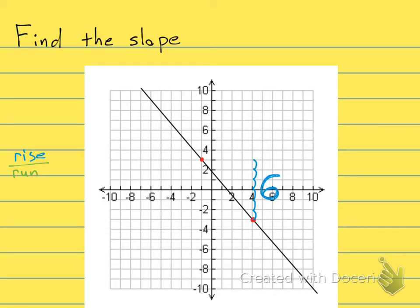And my run now is back, is in the negative direction. 1, 2, 3, 4, 5, so it is a negative 5.